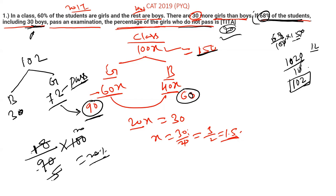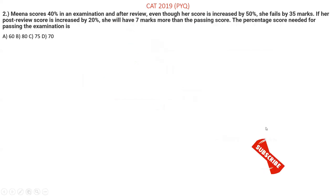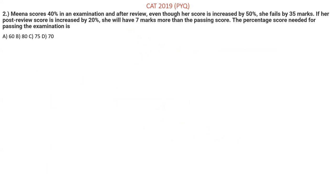Very easy question — I hope that is clear to you. Moving on to the second question. Please pause the video, solve the question, then check the solution. Mina scored 40% in an examination. After review her score is increased by 50%, but she still fails by 35 marks. If her post-review score is increased by 20%, she will have 7 more marks than the passing score. We have to find the percentage score needed for passing the examination. The options are 60, 80, 75, and 70.